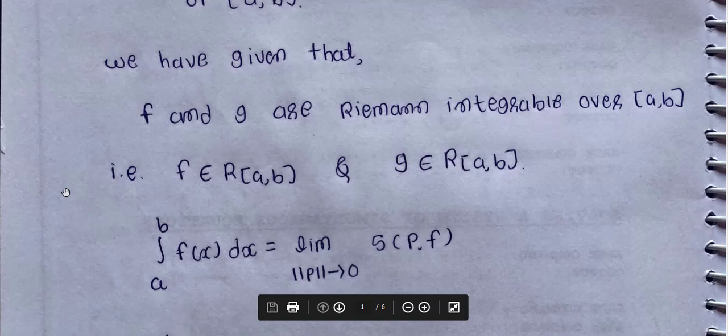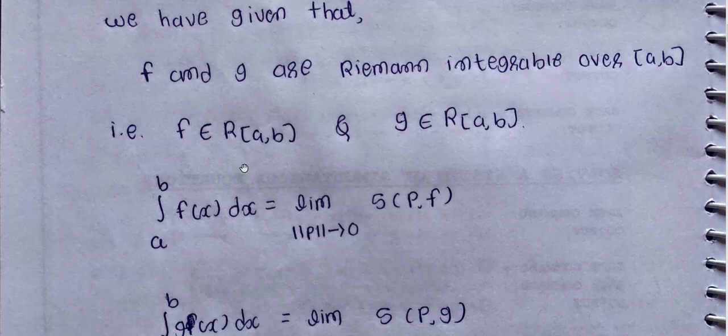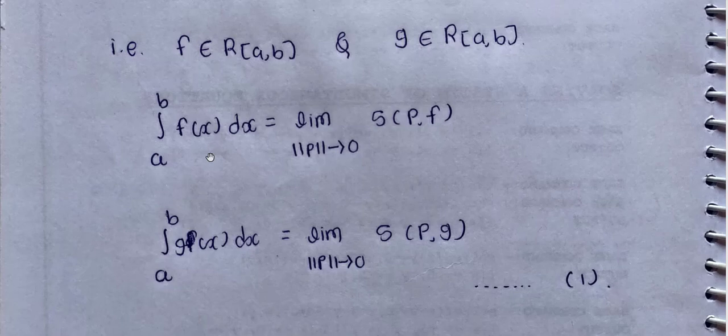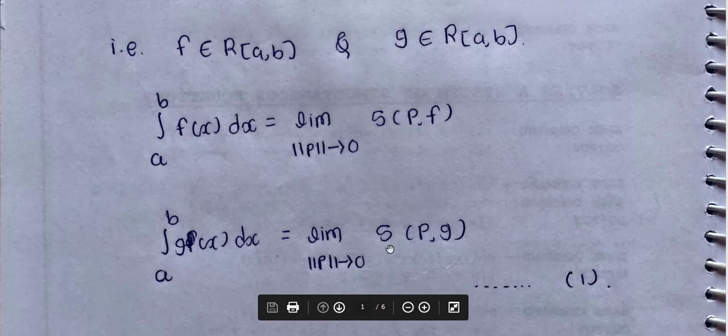We use the second definition of Riemann integral. Since f is Riemann integrable, the integral from a to b of f(x) dx is equal to the limit as norm of P tends to 0 of S(P, f). Similarly for g, the integral from a to b of g(x) dx equals the limit as norm P tends to 0 of S(P, g). This gives us equation number one.